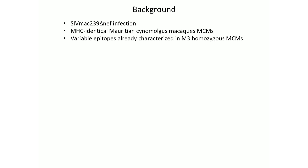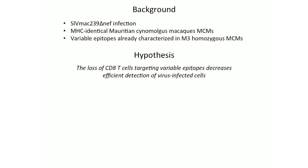Notably, previous data from our laboratory suggests that T cells targeting epitopes that accumulate variants are necessary for virus control. Accordingly, we hypothesize that the loss of CD8 T cells targeting variable epitopes decreases the efficient detection of virus-infected cells.